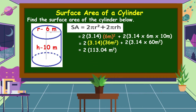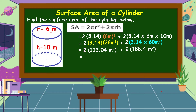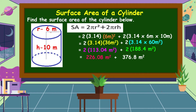Solving: 3.14 × 36 m² = 113.04 m²; 2 × 113.04 = 226.08 m². Then 3.14 × 60 m² = 188.4 m²; 2 × 188.4 = 376.8 m². Adding: 226.08 + 376.8 = 602.88 m². This is the surface area of this cylinder.